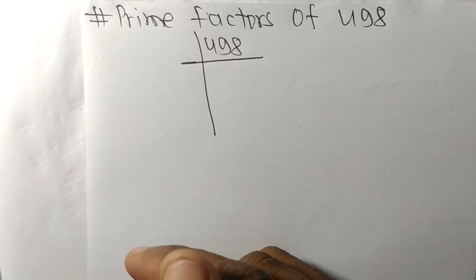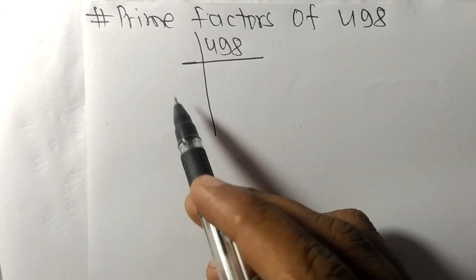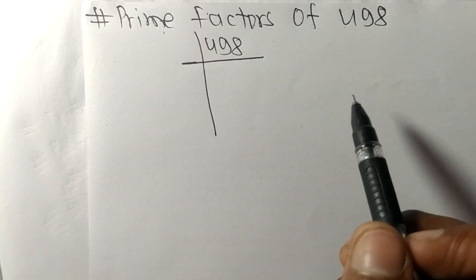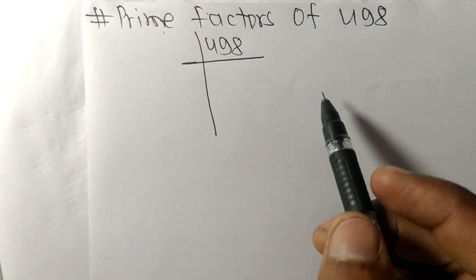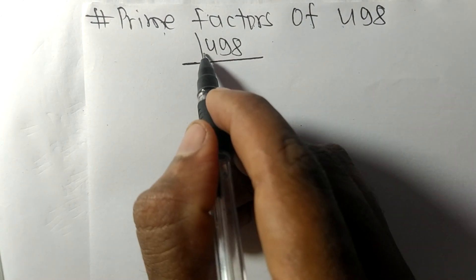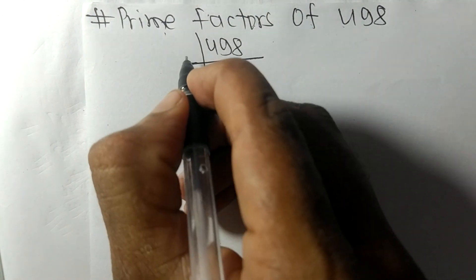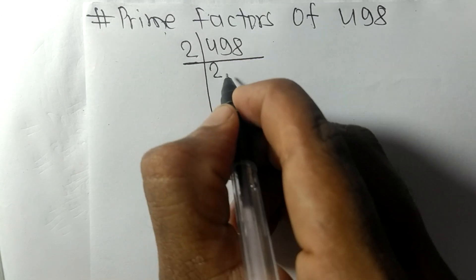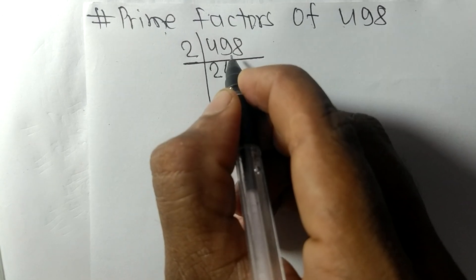Today in this video we shall learn to find the prime factors of 498. At last it contains even number 8, so this whole number is divisible by 2. 2 times 2 means 4, 2 times 4 means